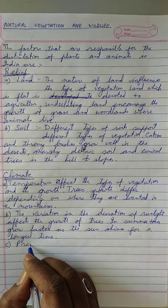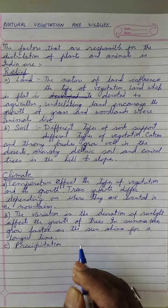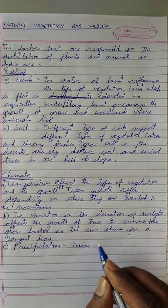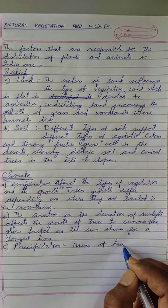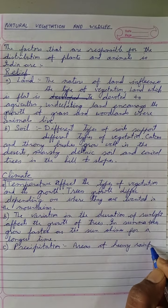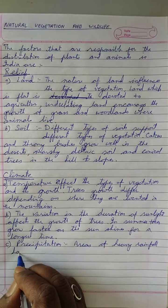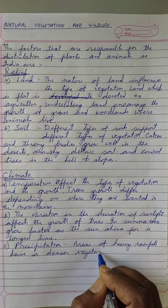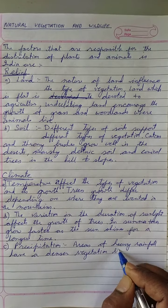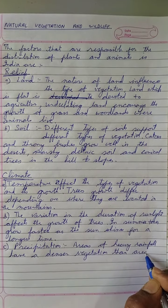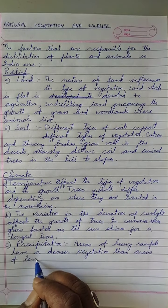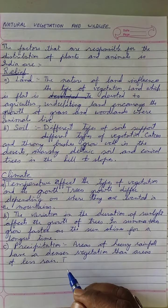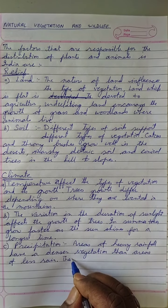Precipitation means rainfall. Areas of heavy rainfall have denser vegetation — meaning trees and plants grow close to each other — compared to areas of less rain. Like in a desert, you won't find trees even at very long distances, because there is very little rainfall.